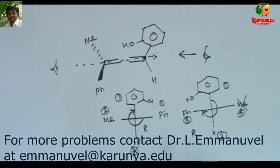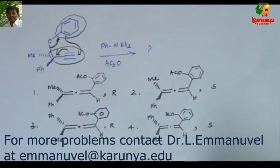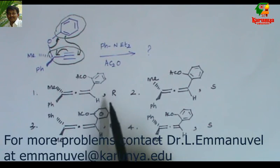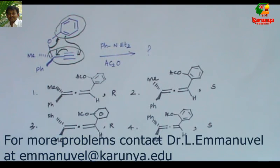If you give priority after writing all four groups or atoms at once, then it will be wrong. Now you can see the R stereochemistry is confirmed, so either option one or option three should be the correct answer.